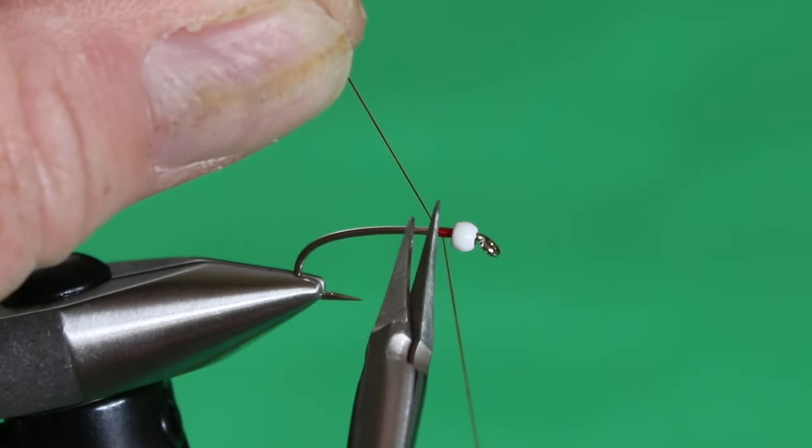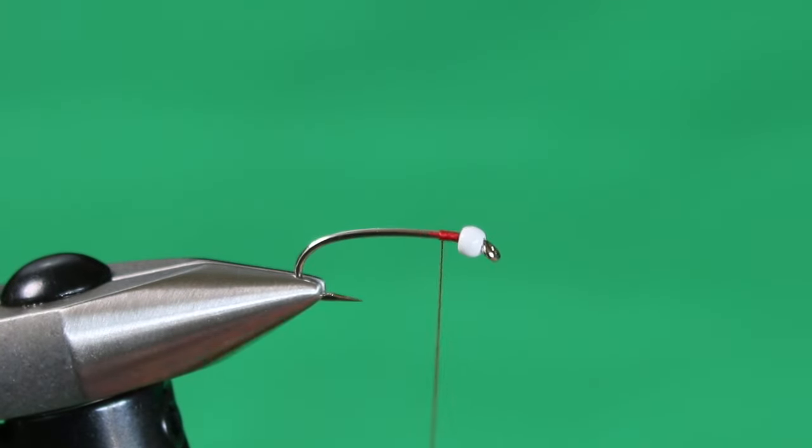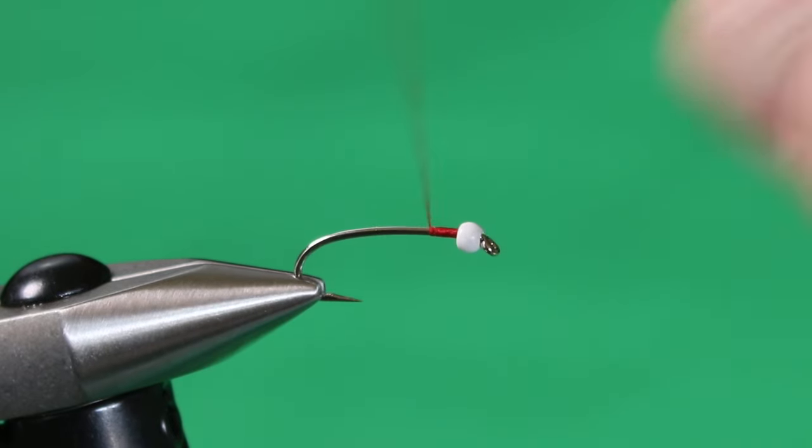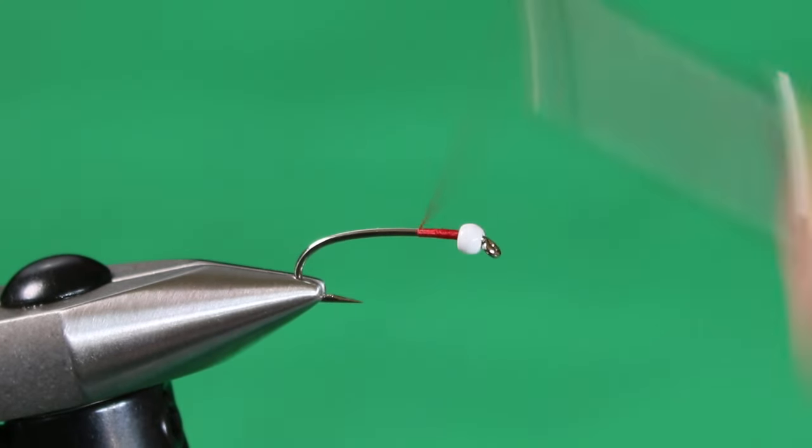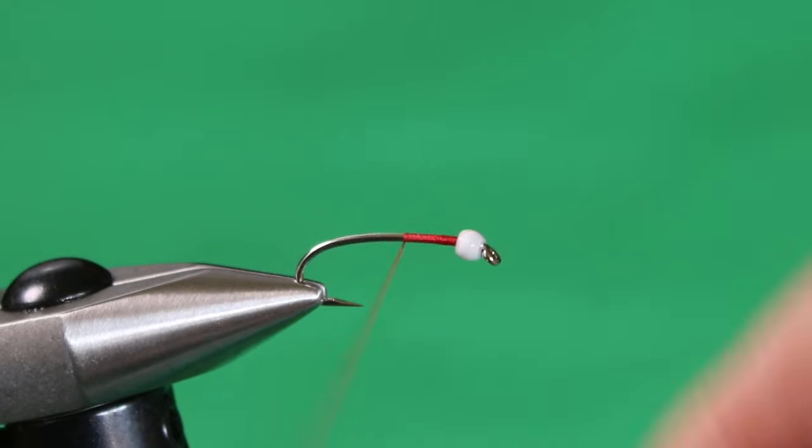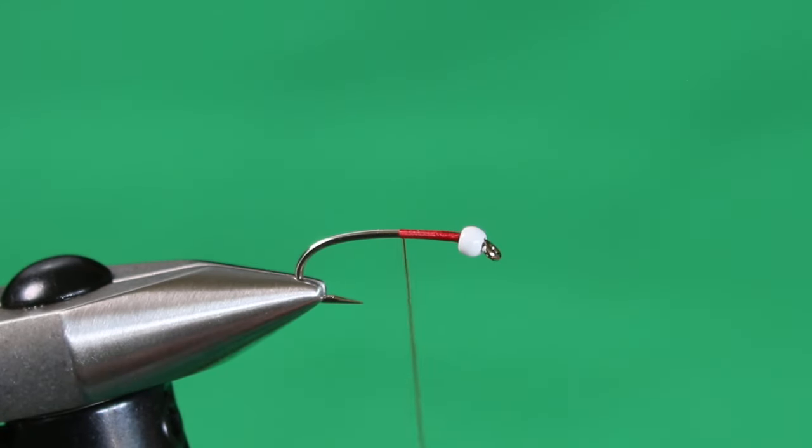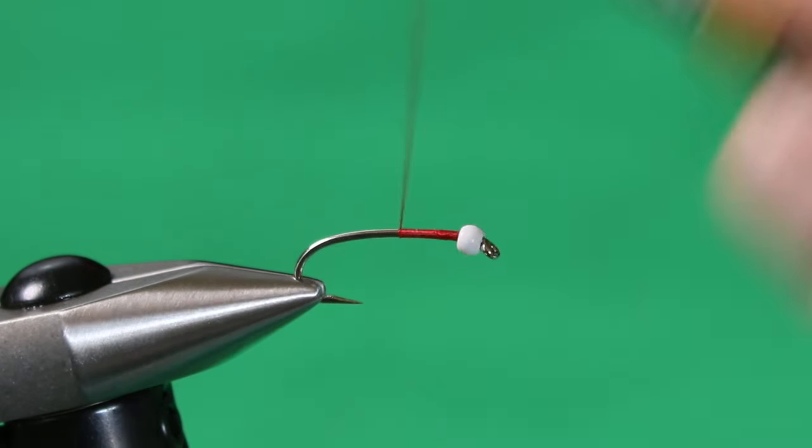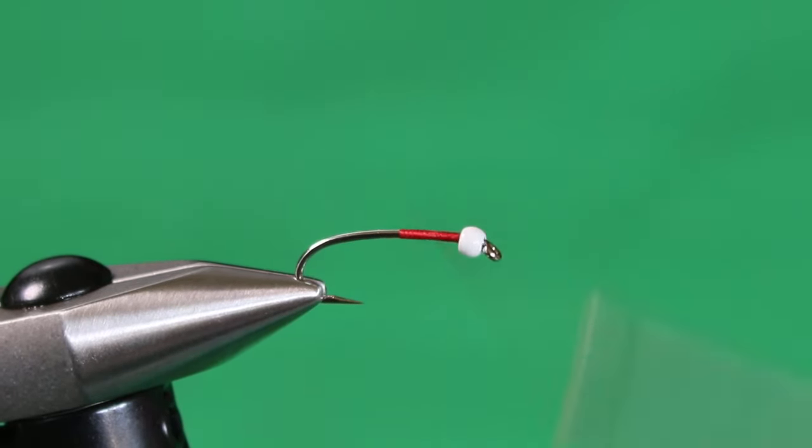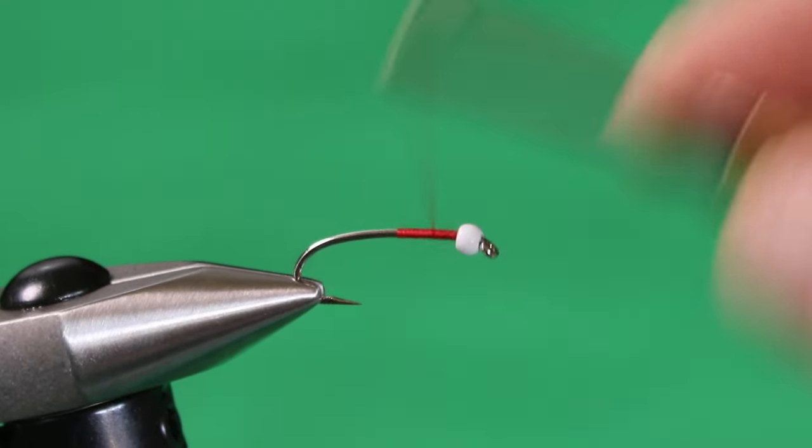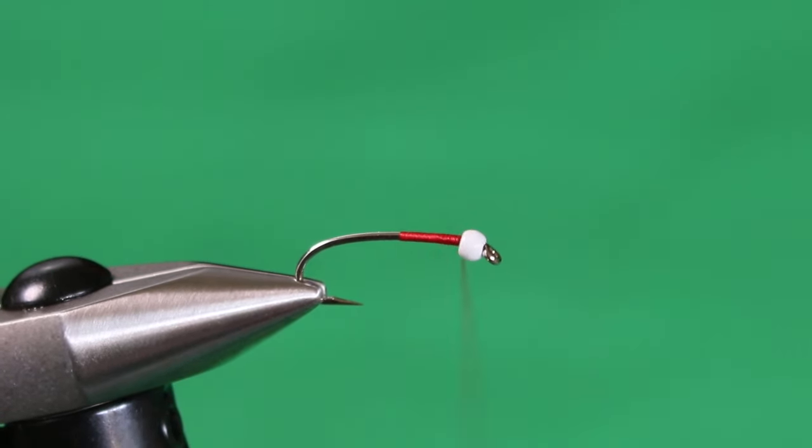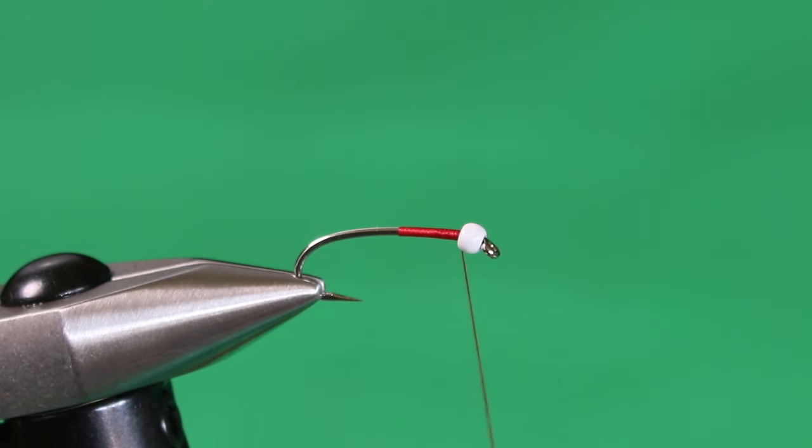Trim away the excess. Give that bobbin a counterclockwise spin to flatten the wraps. Go down about halfway, stop, spin, and go back up to the bead. We're slowly building in a taper, so I'm being very deliberate doing this so I can repeat it and have consistency with my flies when I'm tying in batches.